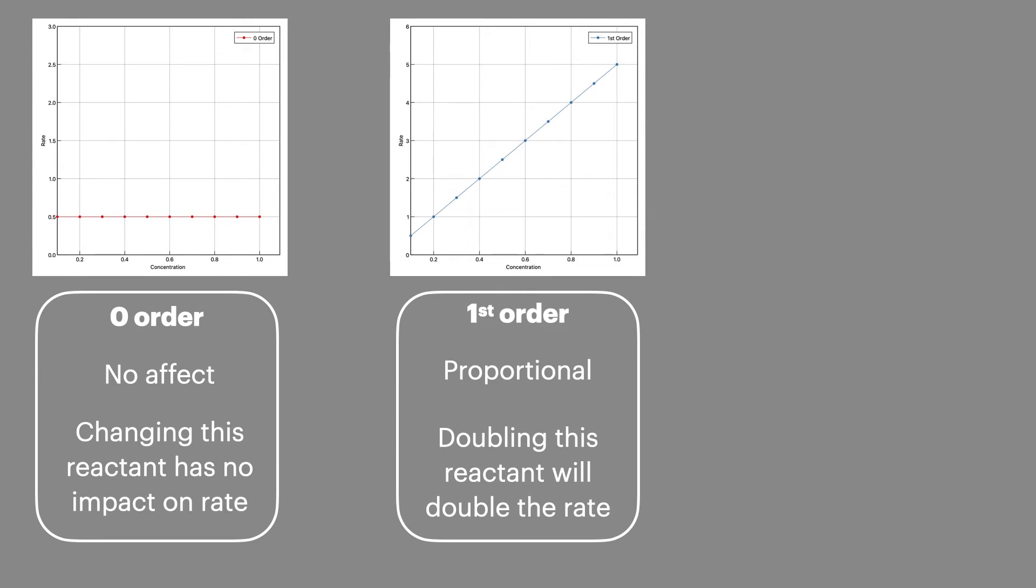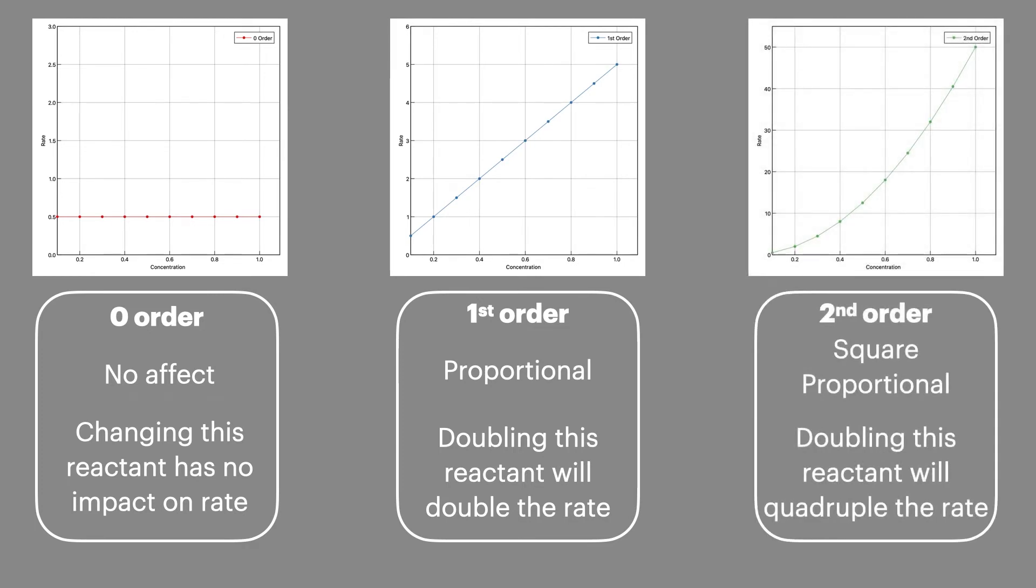In a first order reactant as concentration increases the rate will increase by the same amount. It's proportional. And for a second order reactant as the concentration increases the rate will increase by double the amount, what we call square proportional.